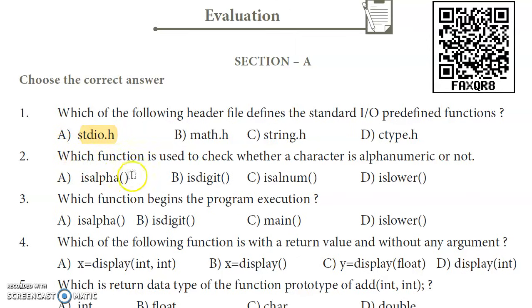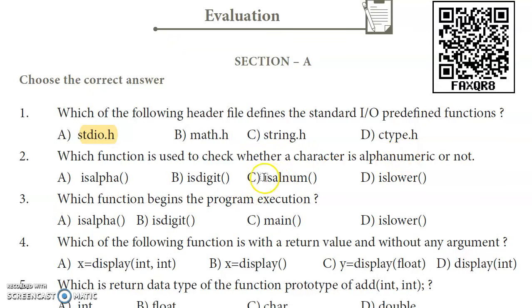Second question: which function is used to check whether a character is alphanumeric or not? The answer is option C — isalnum. The isalnum function checks whether a character is alphanumeric, and option C is the correct answer.